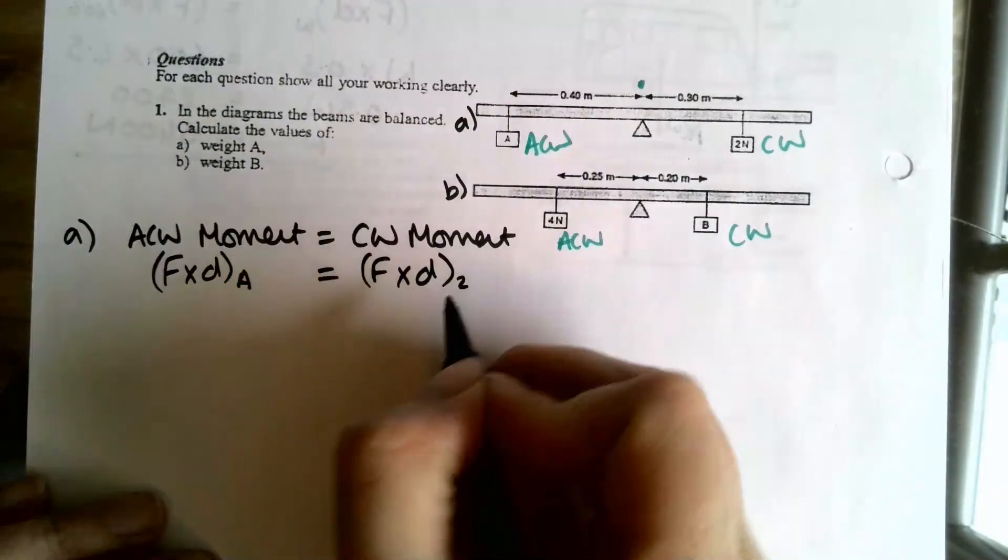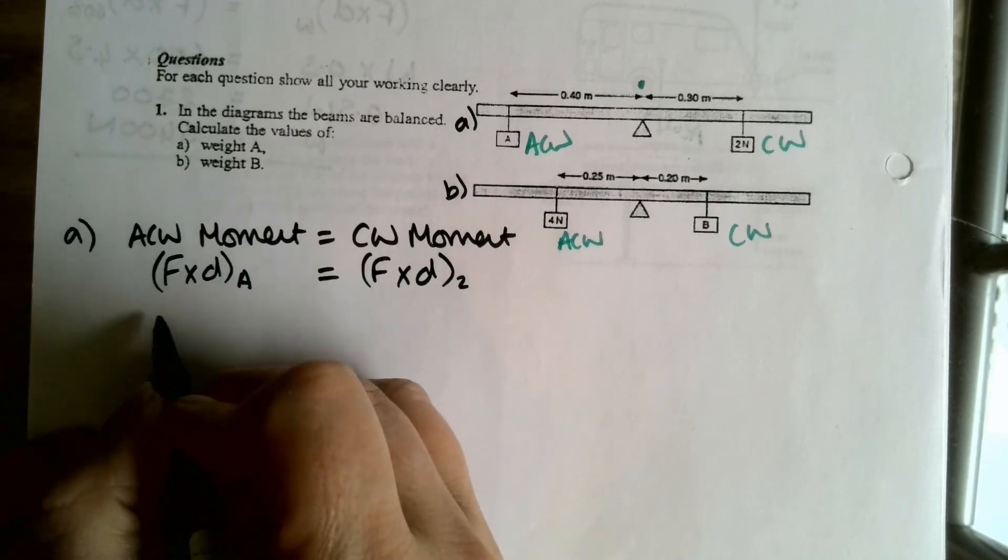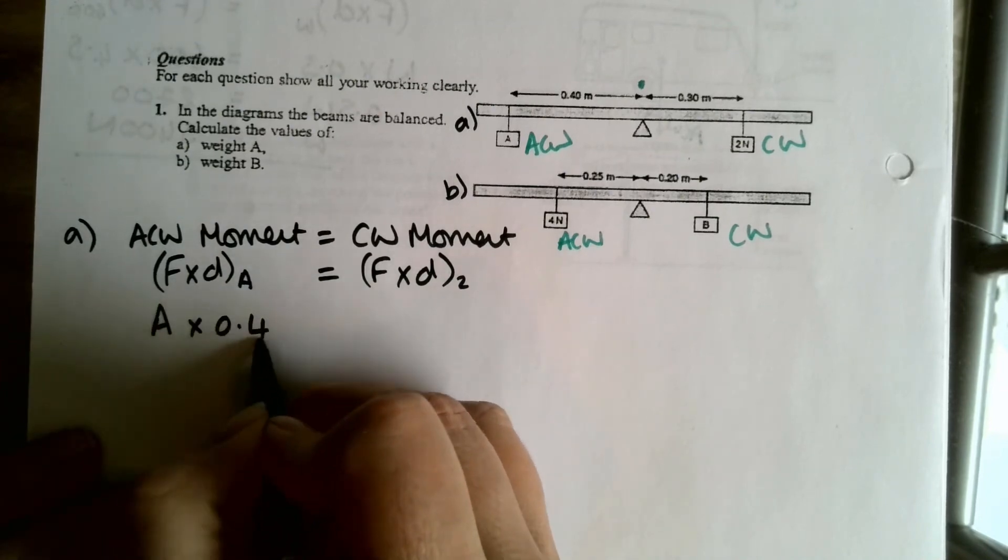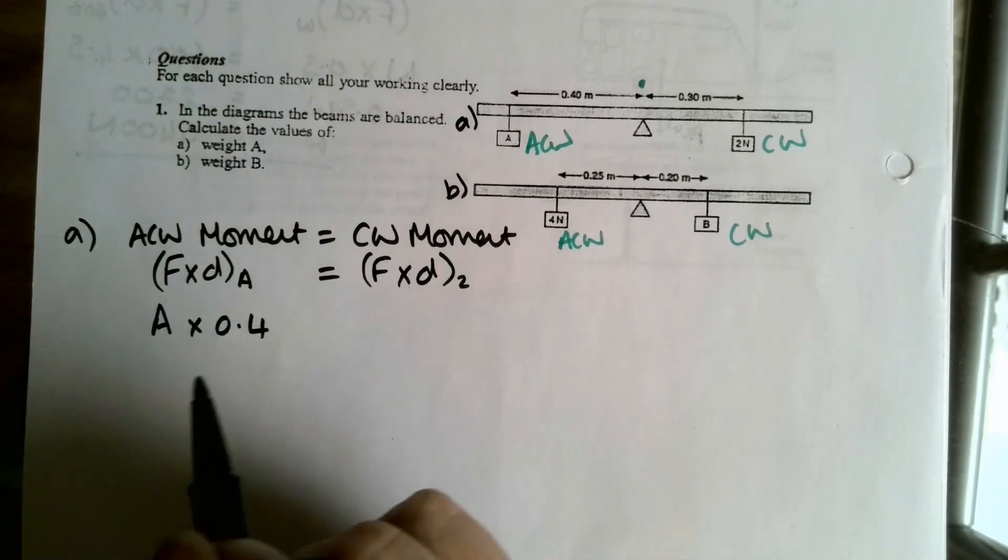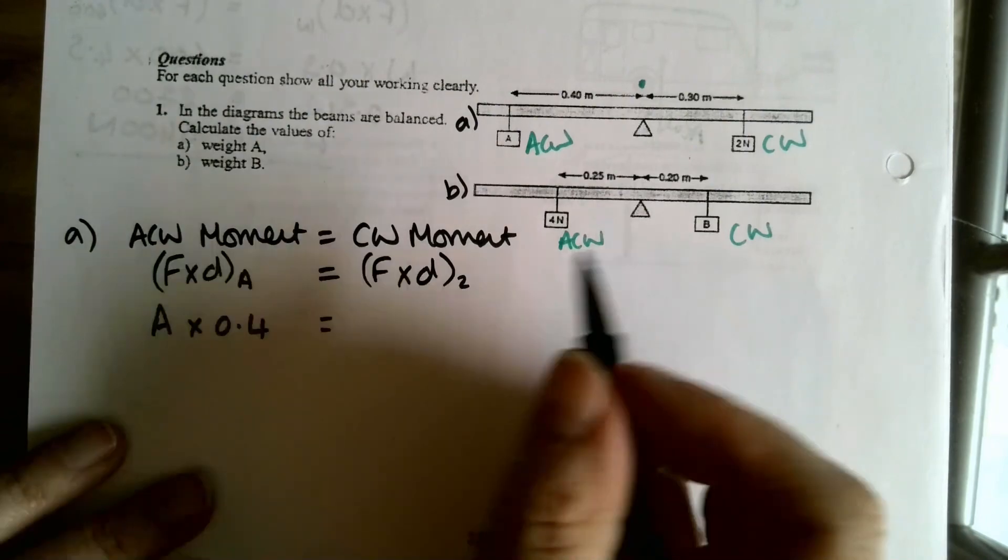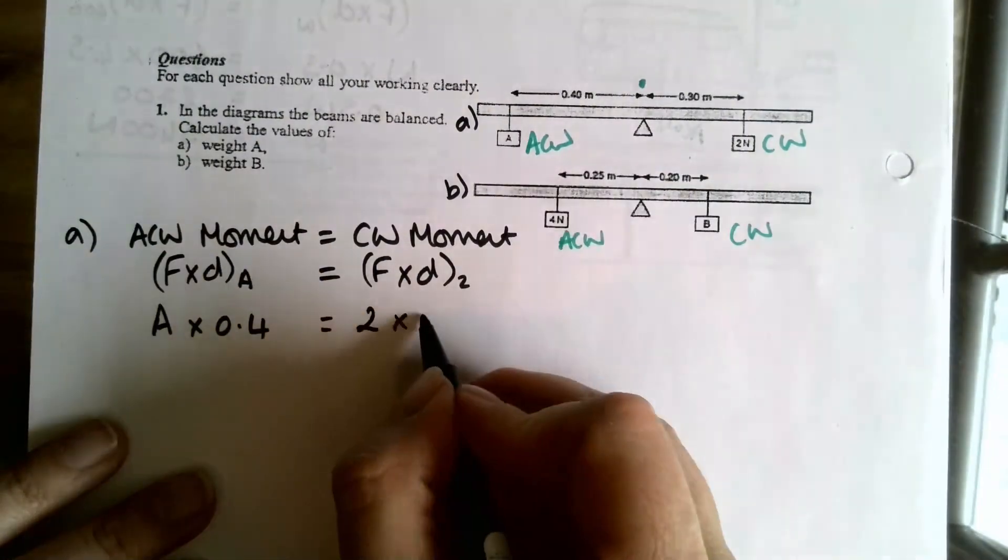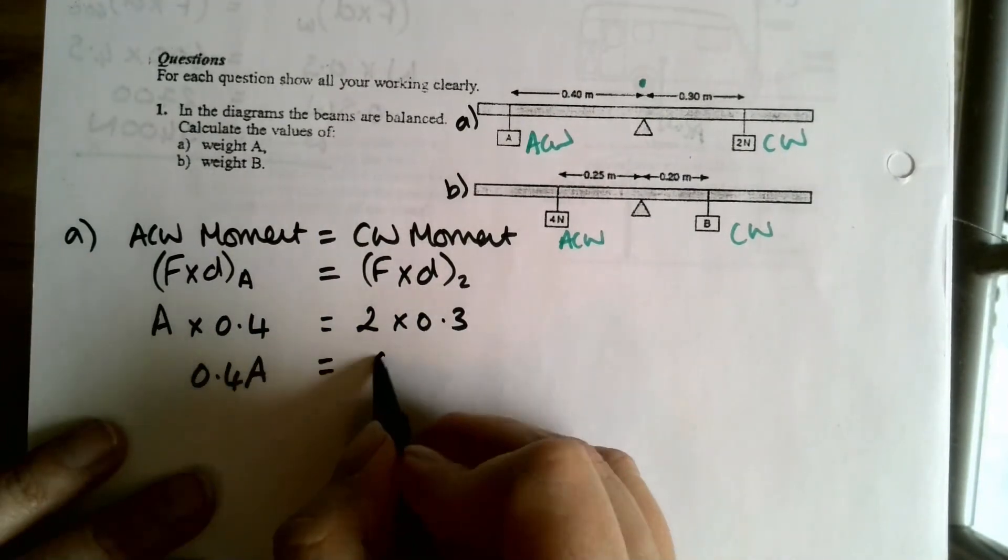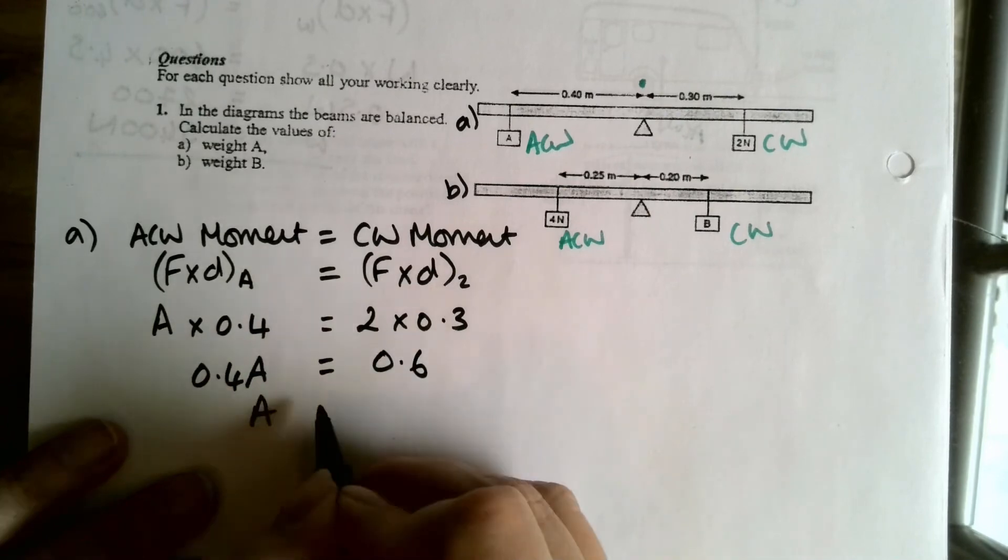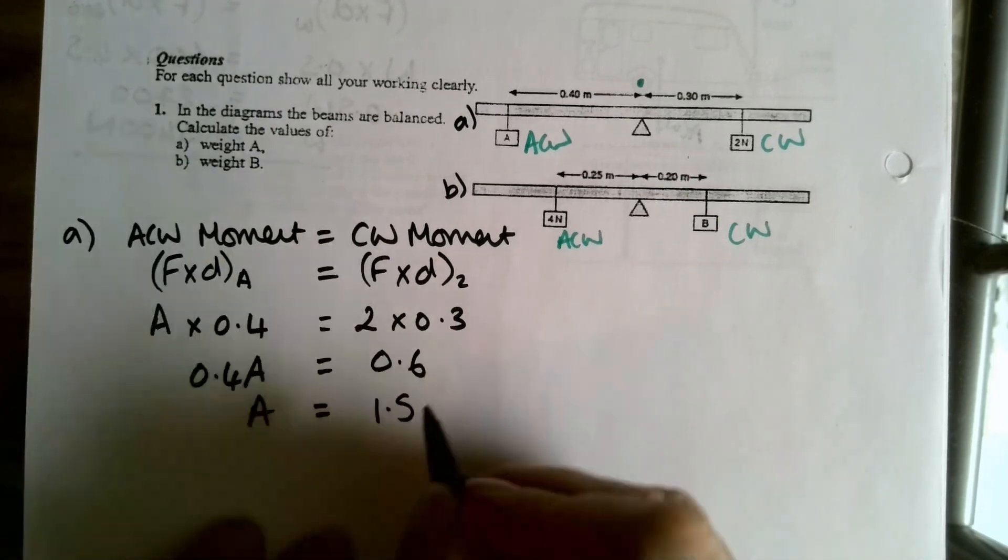So for my anti-clockwise I've got force times distance for A is equal to force times distance, my clockwise, for this 2 newton force here, so just call that 2. So A multiplied by 0.4, or if you wanted to leave that as F you could, I probably will do either, mix and match, is equal to 2 newtons multiplied by 0.3, because that's the distance it is from the pivot. So 0.4A equals 0.6, and that's going to be 1.5. And this is a force, so it's newtons.